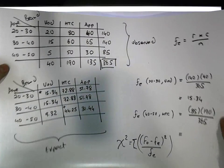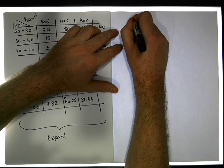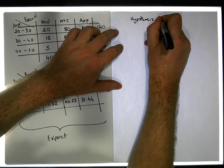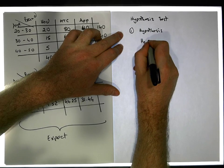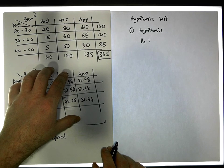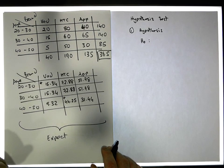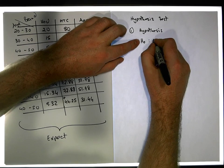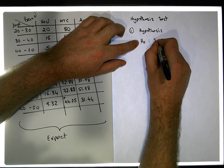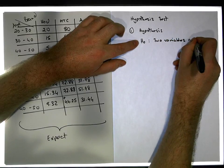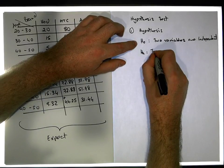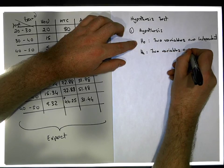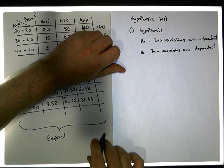Let's start our actual hypothesis test. Don't forget the hypothesis test has five steps. Step one is to define the hypothesis. The null position — well, we've built our expected frequencies assuming these two variables are independent. So the null hypothesis is that the two variables are independent. Which means the alternative hypothesis is that the two variables are dependent.